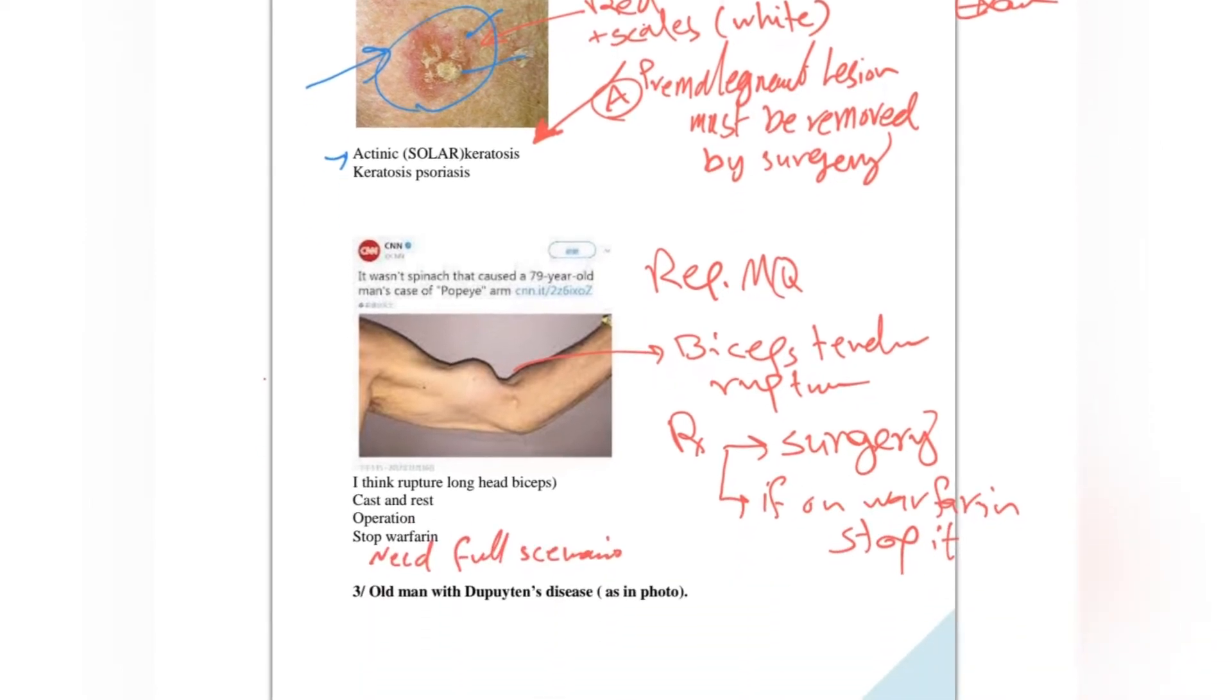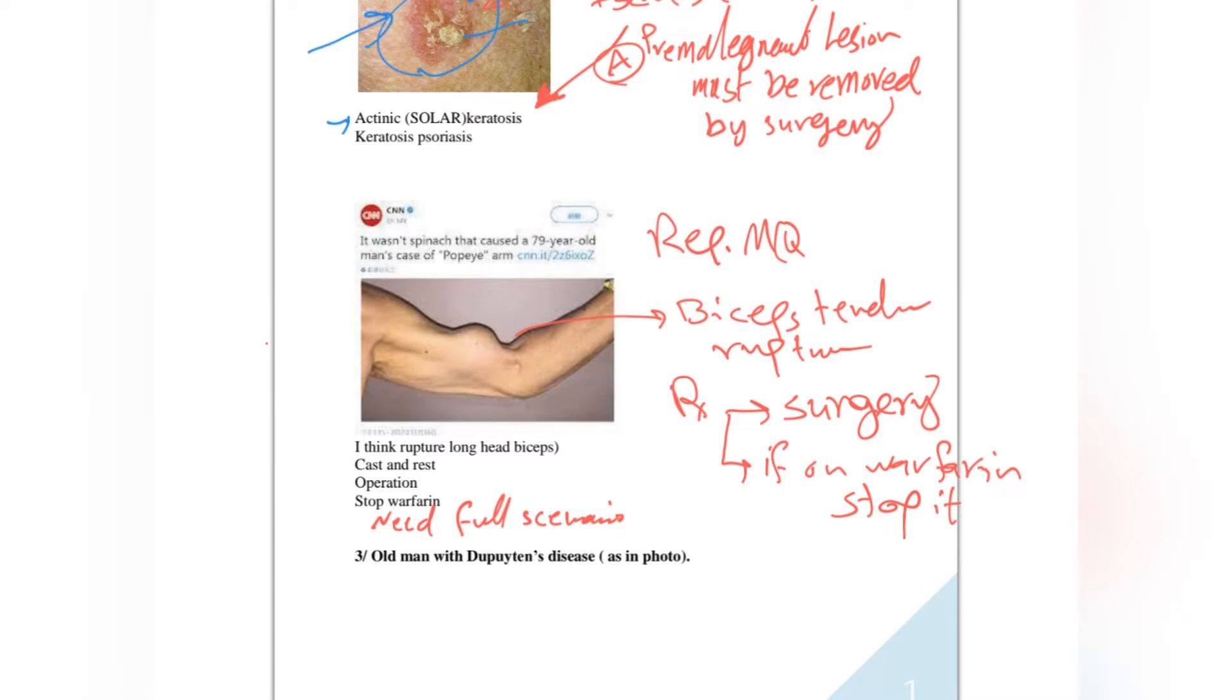Question two is very important and very repetitive in August 2022. Here you see a biceps tendon rupture. This condition needs surgery, but if the patient is on warfarin, you have to stop warfarin. For this picture we need full scenario.